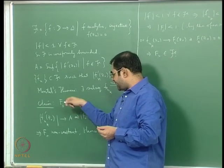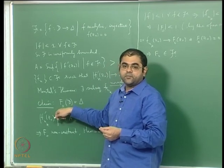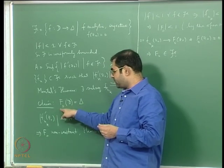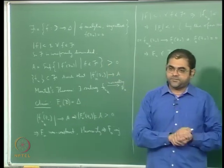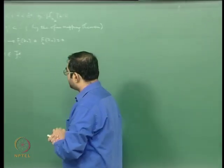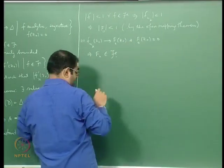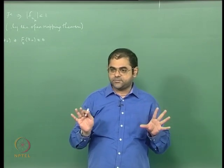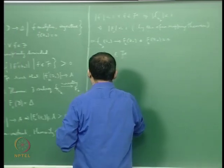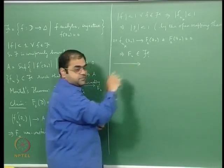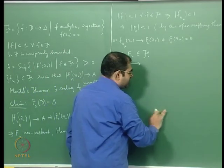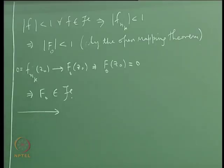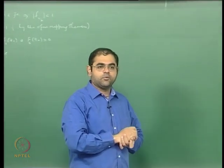Now we need to show that f₀ maps D onto the whole unit disc. Since f₀ is already injective, an injective holomorphic map is an isomorphism onto its image, so proving surjectivity will complete the Riemann mapping theorem. This requires the use of hyperbolic geometry, so let us briefly go back to that setting.